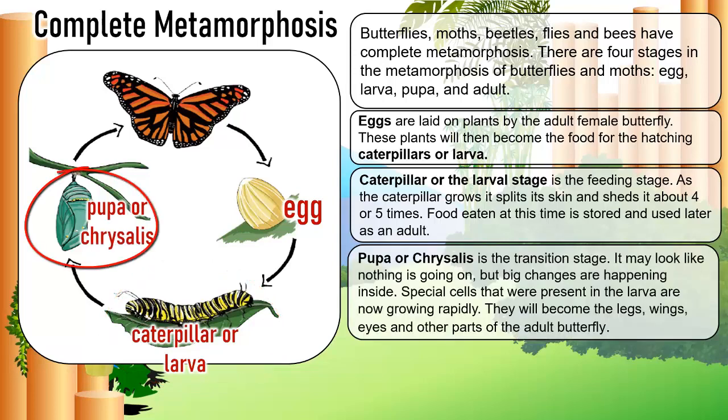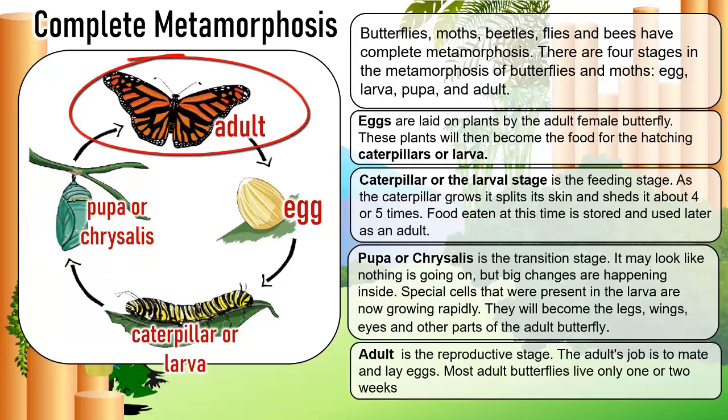Food eaten at this time is stored and used later as an adult. Pupa or chrysalis is the transition stage. It may look like nothing is going on, but big changes are happening inside. Special cells that were present in the larva are now growing rapidly — they will become the legs, wings, eyes, and other parts of the adult butterfly. The adult is in the reproductive stage; its job is to mate and lay eggs. Most adult butterflies live only one or two weeks.